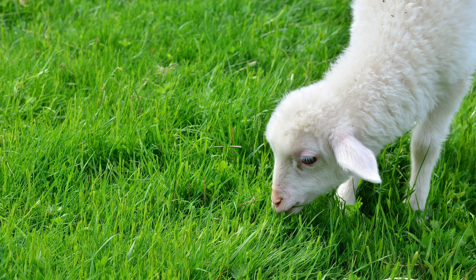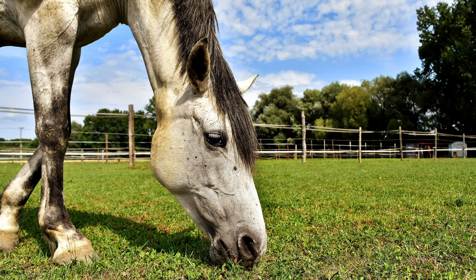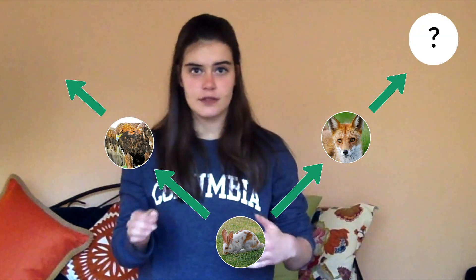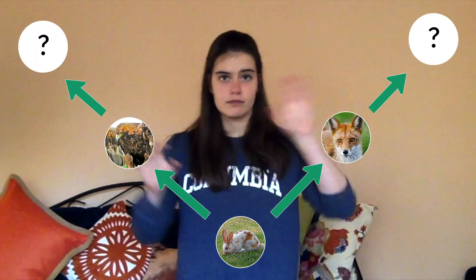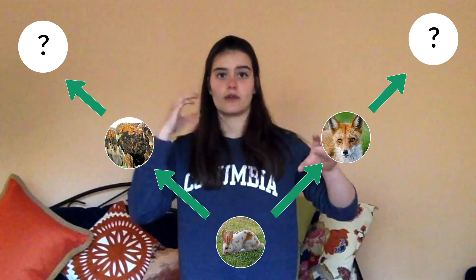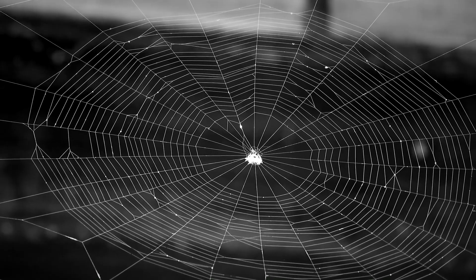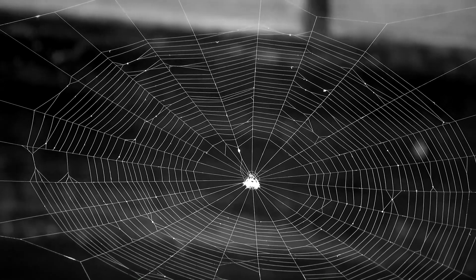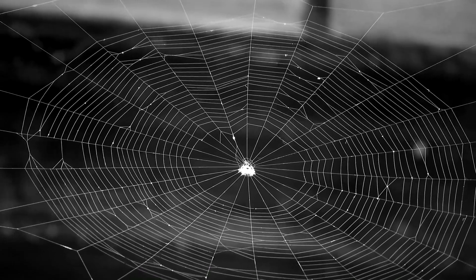So instead of just one thing eating the grass, we're going to have a bunch of animals eating the grass. And instead of just having one predator, the rabbit might get eaten by a fox and a hawk, and then other animals might eat the fox or the hawk. It's going to look a little bit like a web, which is why we talk about it that way. Think about a spider's web — we're going to have the primary producer at the center, and then it's going to branch out like a spider's web.